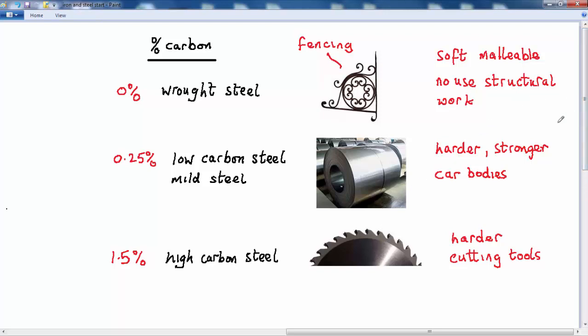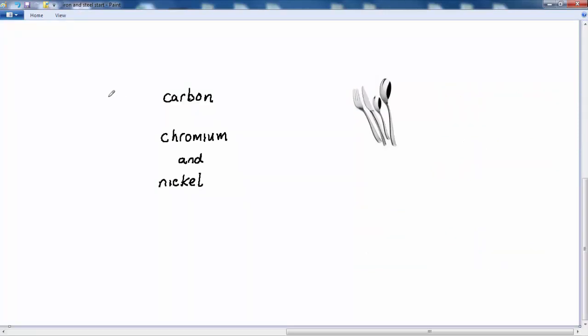The fourth type of steel we're going to look at is stainless steel, and stainless steel is made from typically 0.15% carbon, and we'll have typically more than about 15% chromium and nickel added to the iron. So it's an alloy of nickel, chromium and iron. So stainless steel is an alloy.